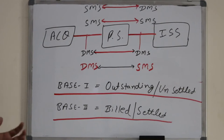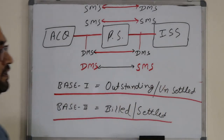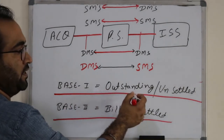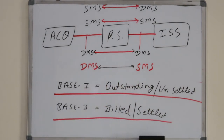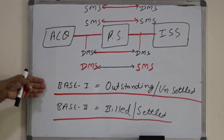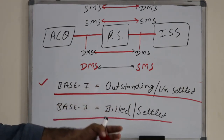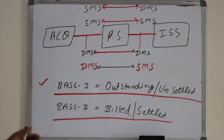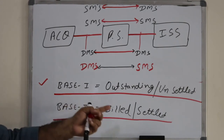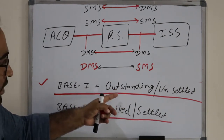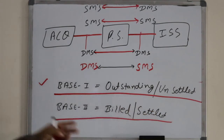Let me give you an example to understand the concept of DMS. If you have a credit card and use internet banking, you may have noticed two options: one is 'outstanding' or 'unsettled' transactions, and the other is 'billed' or 'settled' transactions. When we perform a transaction at the POS terminal — Base 1 — it goes from the terminal to the acquiring bank, then to the payment scheme, then to the issuer. In DMS, the Base 1 transaction always shows as outstanding or unbilled because Base 2 is still pending.